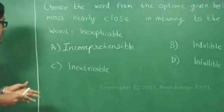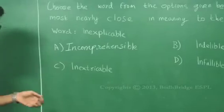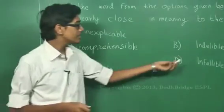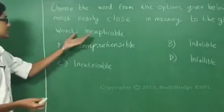Inextricable basically is a situation where you are not able to disentangle or separate, and infallible means impossible to make an error. So option A is the right option.